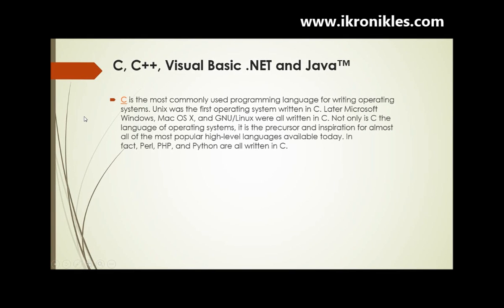As high-level languages develop, new offerings build on aspects of their predecessors. C++ evolved from C, which in turn evolved from two previous languages, BCPL and B. For example, C is now available for most computers, and many of today's major operating systems are written in C or C++. C is a hardware-independent language, and with careful design, it is possible to write C programs that are portable to most computers.